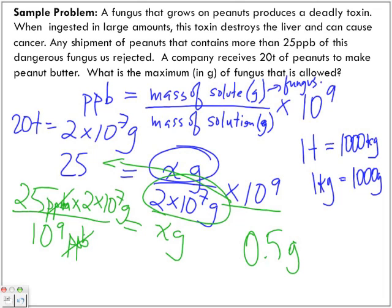0.5 grams. So when they're weighing out how much of the fungus is available, that's how little amount is accepted to reach that 25 parts per billion in all those peanuts. 20 tons worth of peanuts - the fungus cannot be more than 0.5 grams.